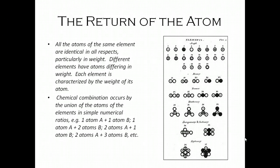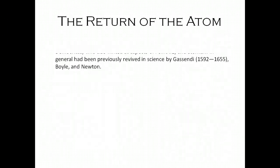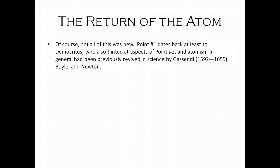If we look carefully at his three points, we'll find that not all of this was new. Point one — that everything is composed of indivisible little atoms — goes back at least to Democritus, if not further back. Around 450 BC there were people talking about everything being composed of these tiny little hard particles. Democritus also hinted at aspects of point number two — that atoms have different characteristics.